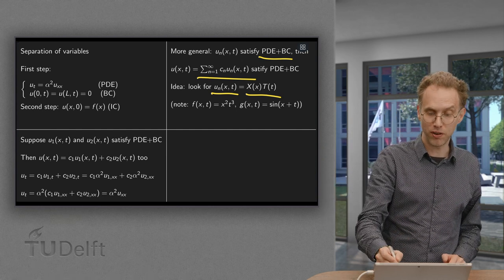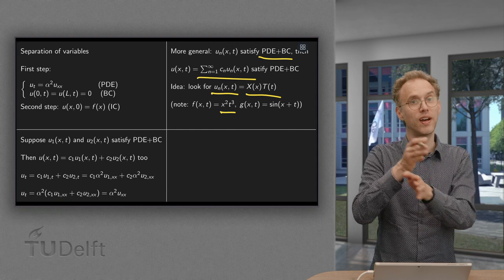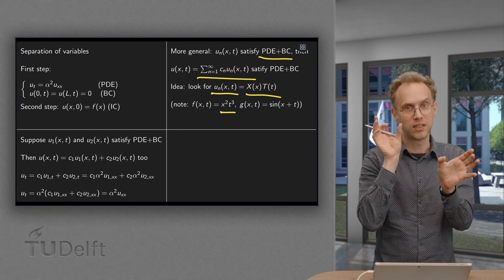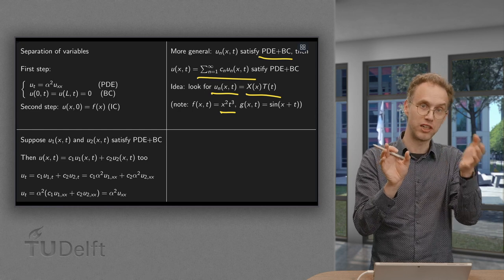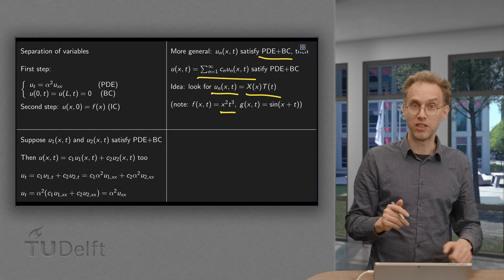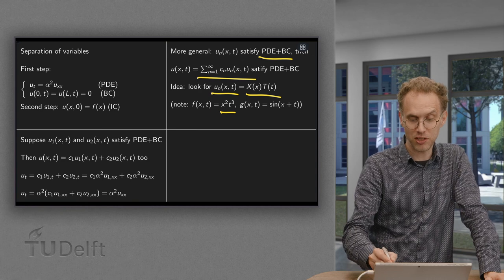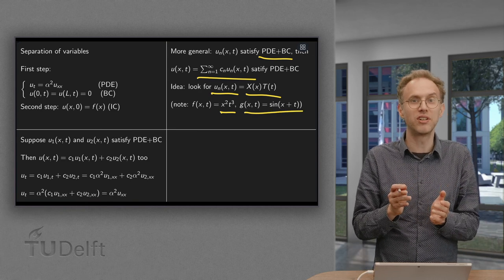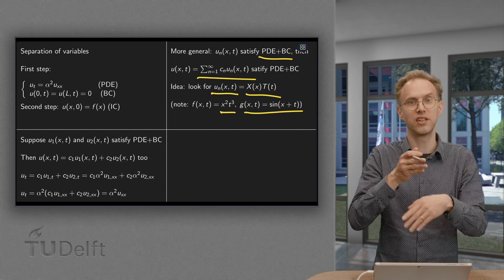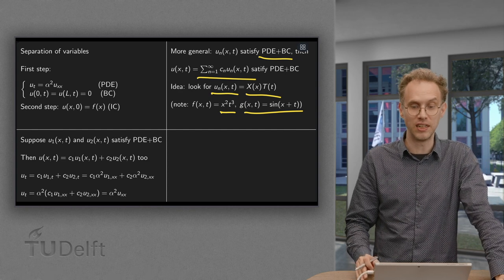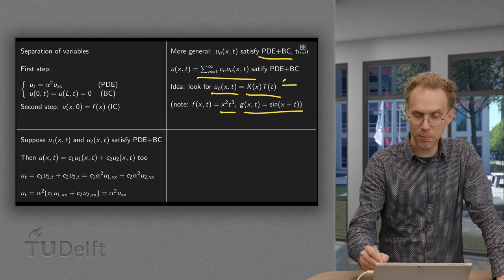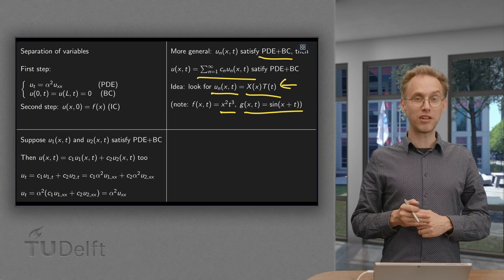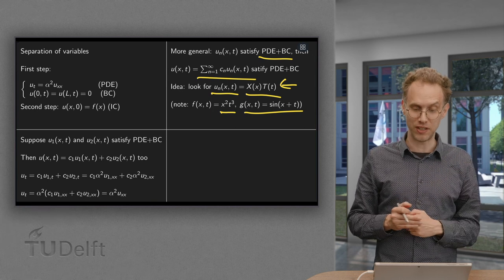Such a function would be for example X squared times T cubed. Then you have a product of a function of only X times a function of only T, namely X squared and T cubed. Well, this is very special because if you take something else like sin of X plus T for example, then you don't have this. You cannot write this as a product of a function of X times a function of T. So this is actually pretty restrictive, a pretty special form, but let's try to find solutions which are exactly of this form.